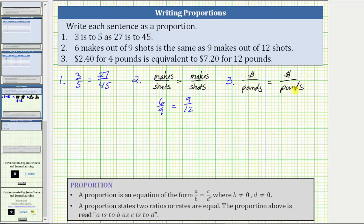Again, leaving the units off in the proportion, for the rate of $2.40 for four pounds, we write 2.4 over four equals, and for the rate of $7.20 for 12 pounds, we write 7.2 over 12.